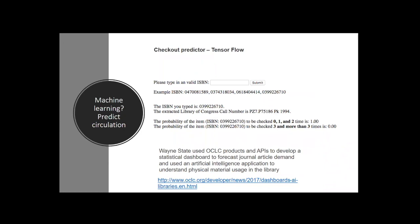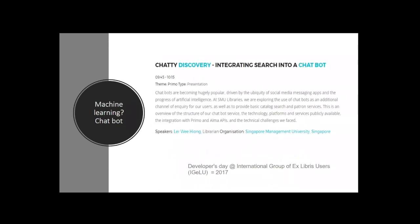Now for some more cutting-edge areas. There's a lot of interest in machine learning. One talk from Wayne State University discussed using OCLC APIs to try machine learning using TensorFlow, though the speaker stressed this was extremely experimental. Analytics platforms like IBM Watson are lowering the barriers to entry to machine learning. There's also emerging interest in chatbots for libraries — libraries have tried chatbots on and off for the past 5-10 years without much success, but there's a new attempt using the latest machine learning techniques. My colleague Lee Hyeong is working on a chatbot that integrates with Primo and Alma APIs.